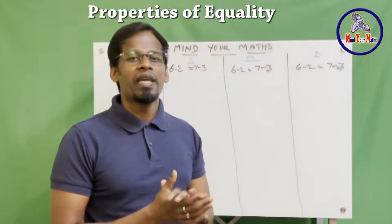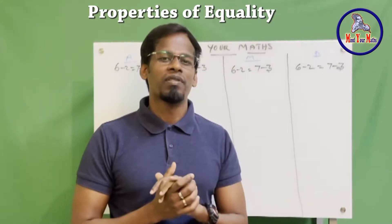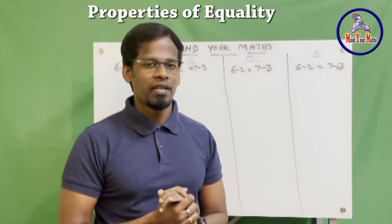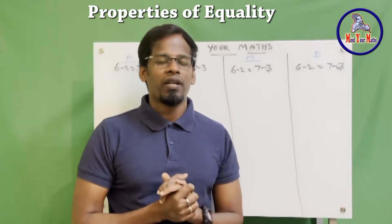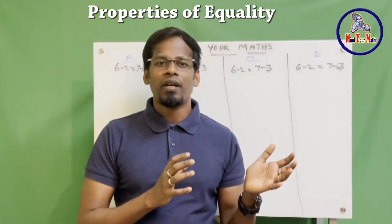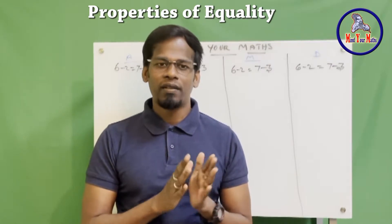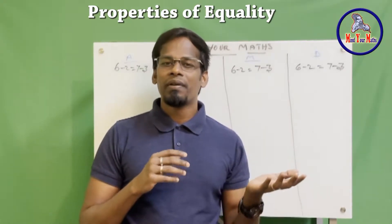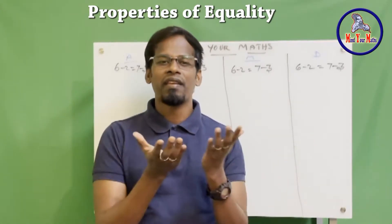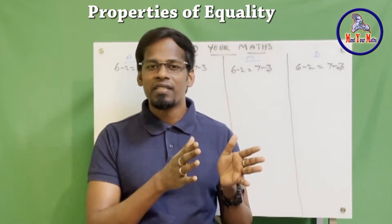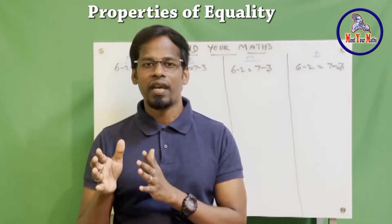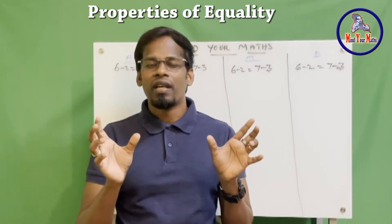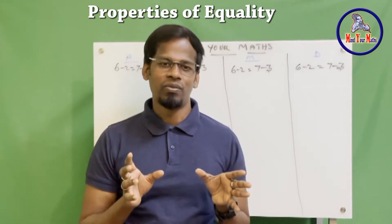If you understand this better, you will be able to solve any algebra problem very easily whenever it comes to these kinds of operations. All four operations are done in an equation based on a constant value — constant value on the left-hand side as well as on the right-hand side. The value can be a number or an alphabet, but it should be done on both sides so that the left-hand side will always be equal to the right-hand side and the equality will always be retained.